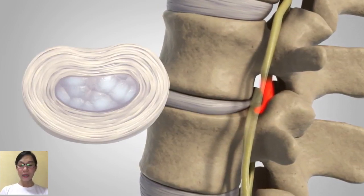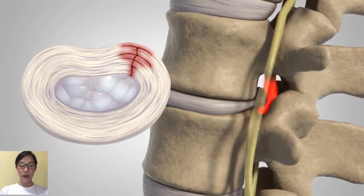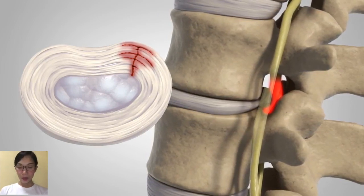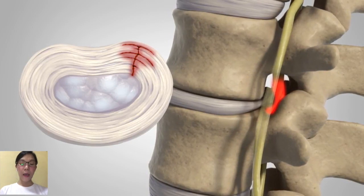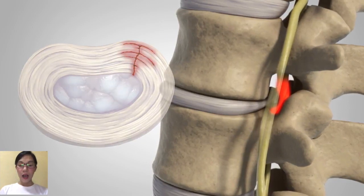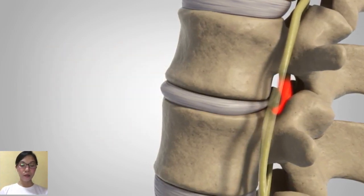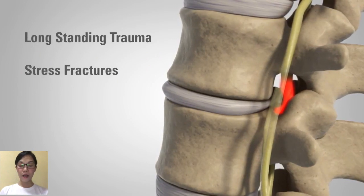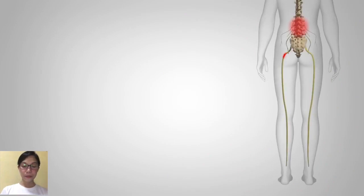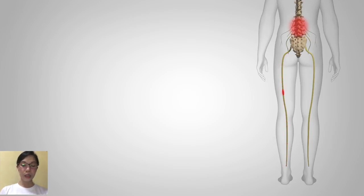A herniated disc may be caused by simple wear and tear of repeated movement over time, or disc degeneration with age. Spinal discs lose some water content with age, making it difficult to support the load from the vertebrae above. Other causes of herniated disc may include long-standing trauma, stress fracture, and congenital abnormalities. While it is possible for an intervertebral disc to herniate at any level of the spine, it most commonly occurs in the lumbar region of the lower back.